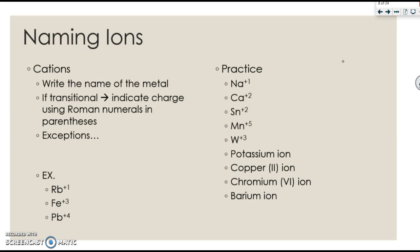If it is a transition metal, so a d-block element, we have to indicate the charge of that particular element using Roman numerals in parentheses. The exceptions to this rule are, of course, zinc and silver. They never get a Roman numeral.